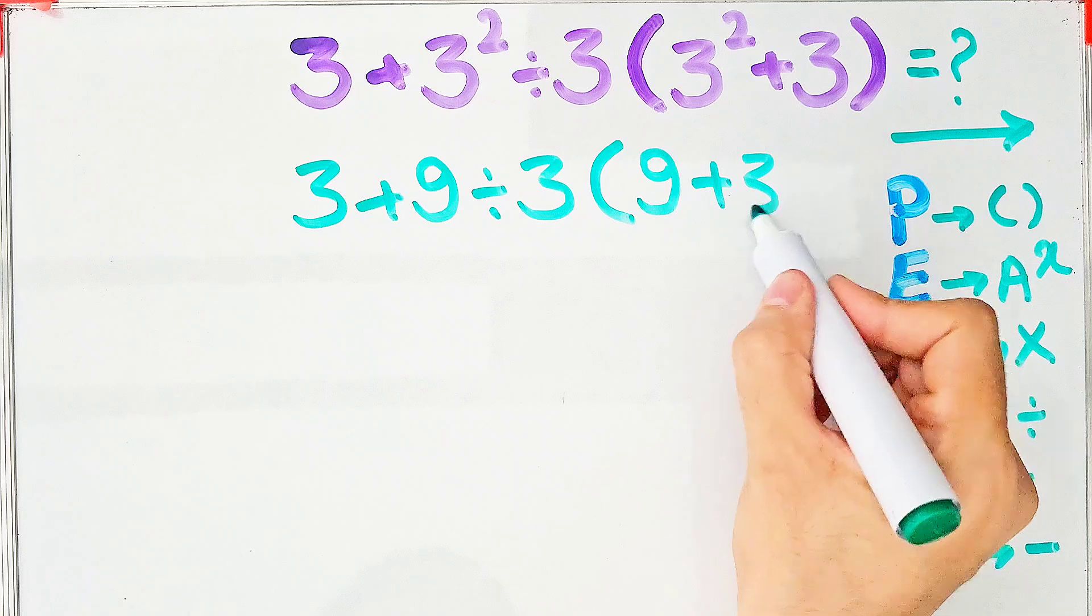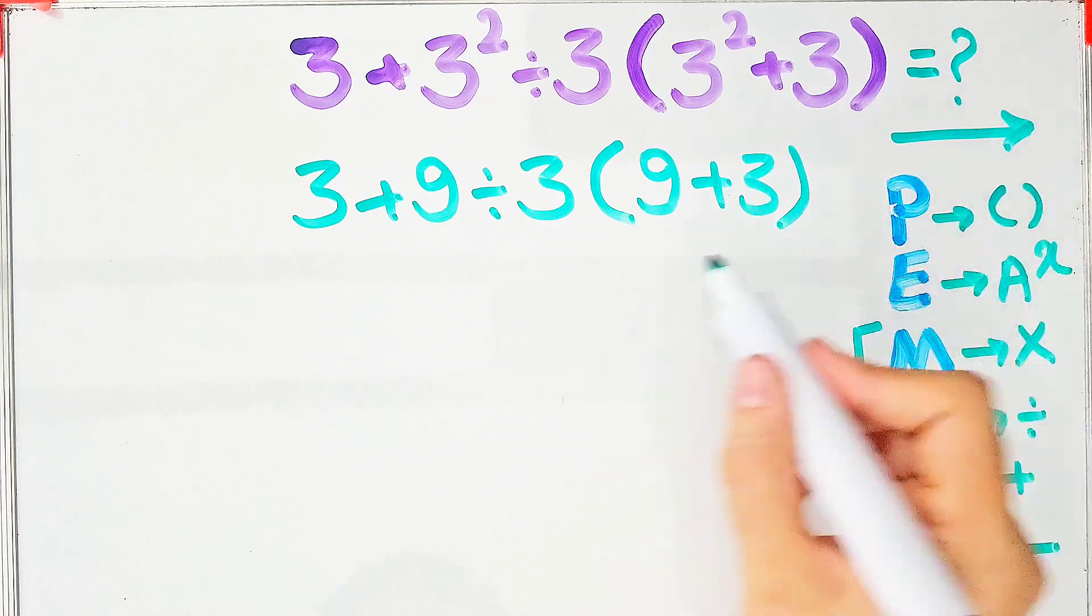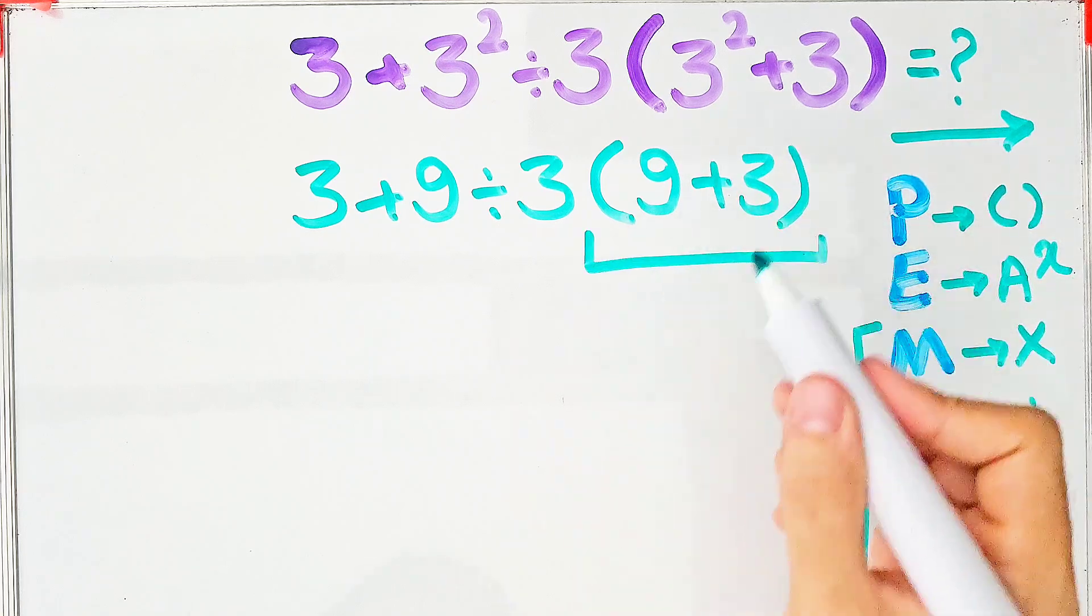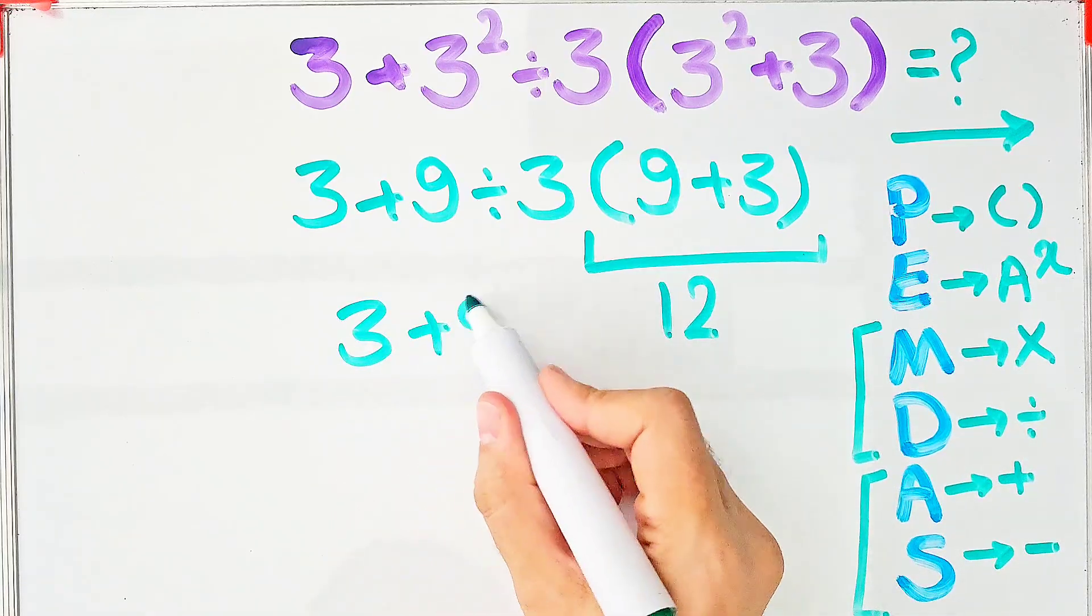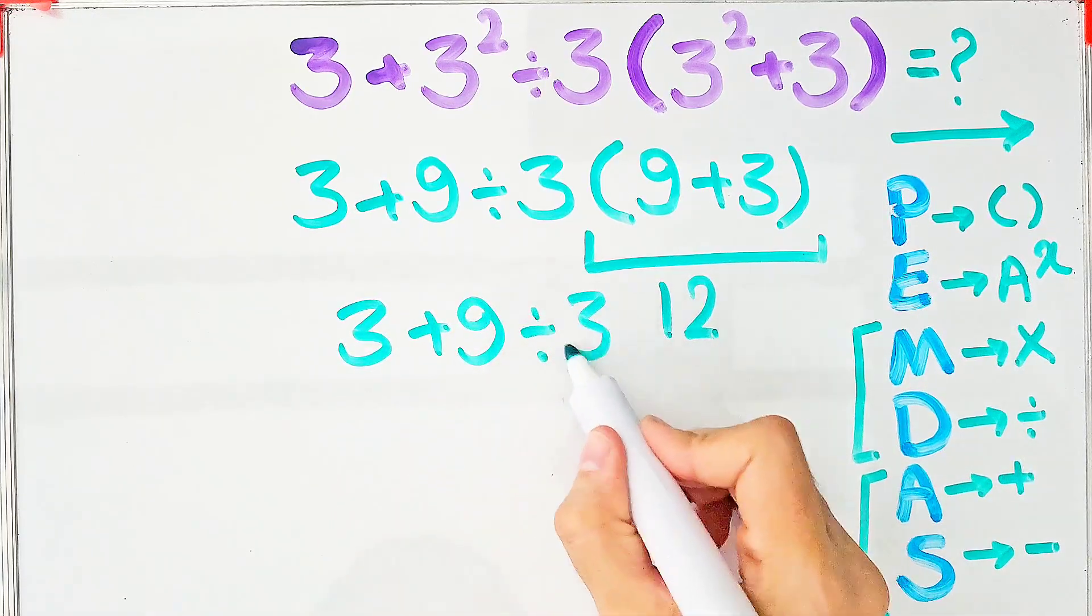Again, according to the PEMDAS rule, we simplify the parentheses. We have 9 plus 3 that equals 12. 3 plus 9 divided by 3 then times 12.